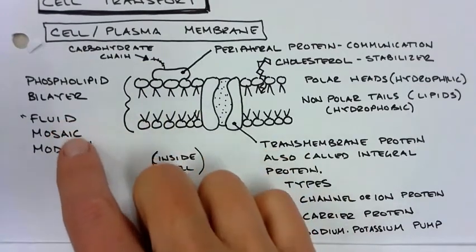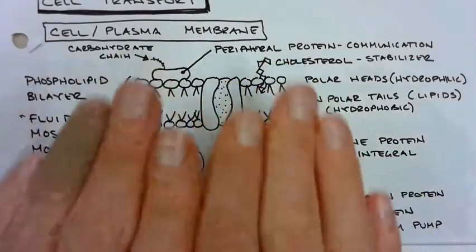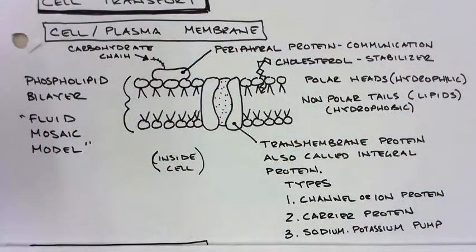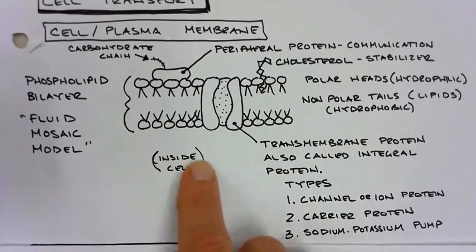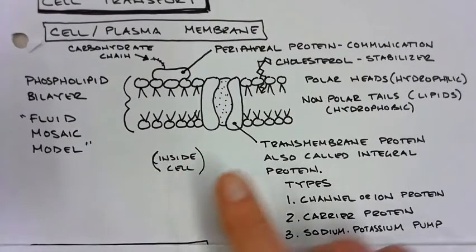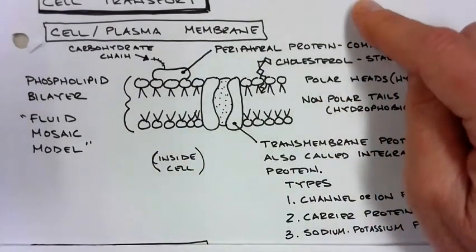So this is called the fluid mosaic model altogether because all these pieces are sort of together and they're moving around all the time. We have something called inside the cell, which is intracellular and outside the cell is extracellular.